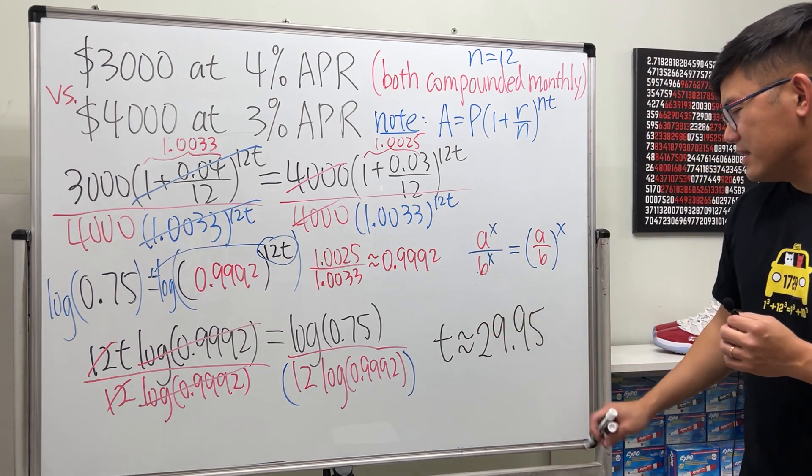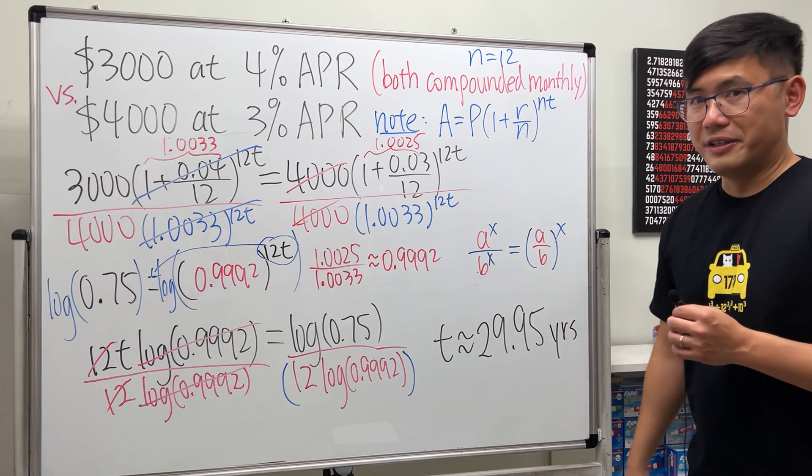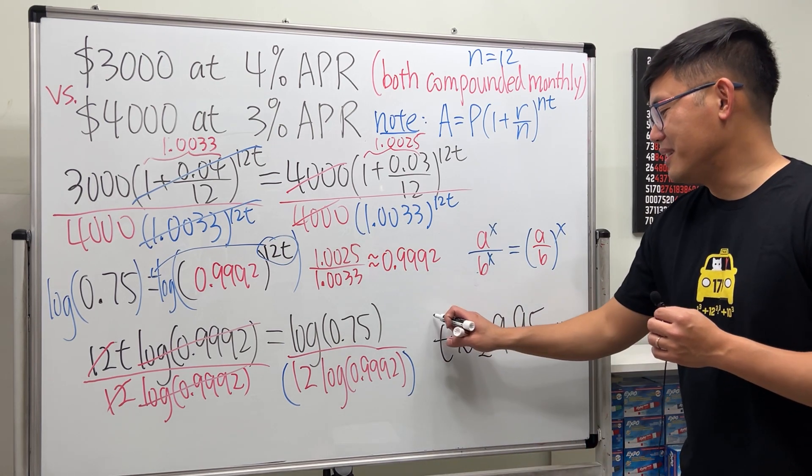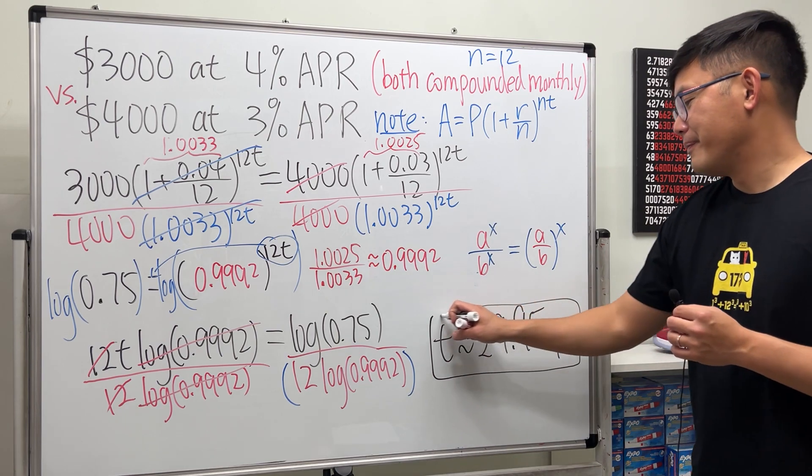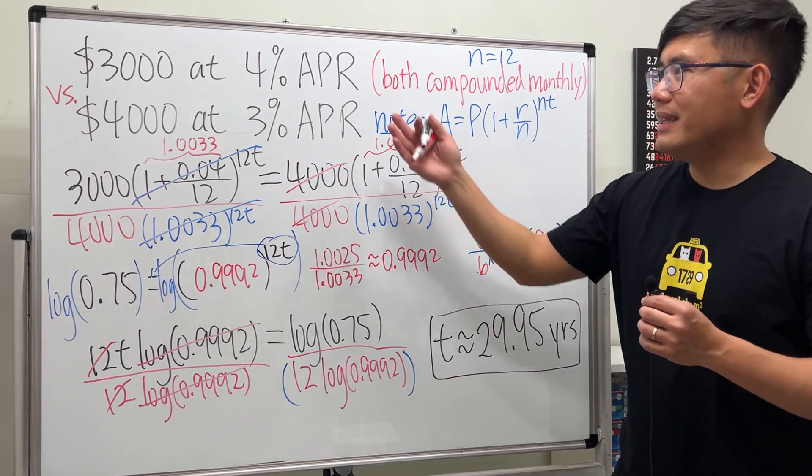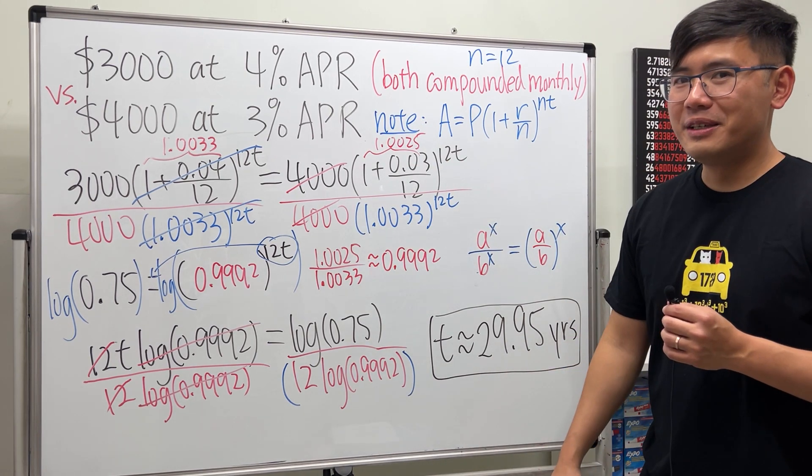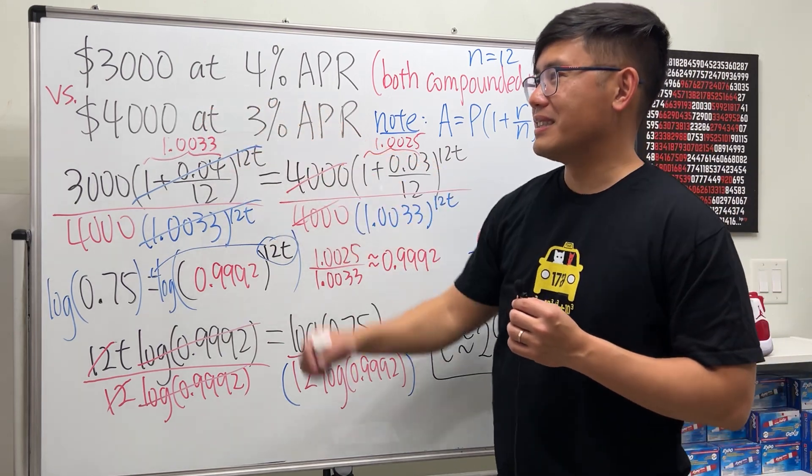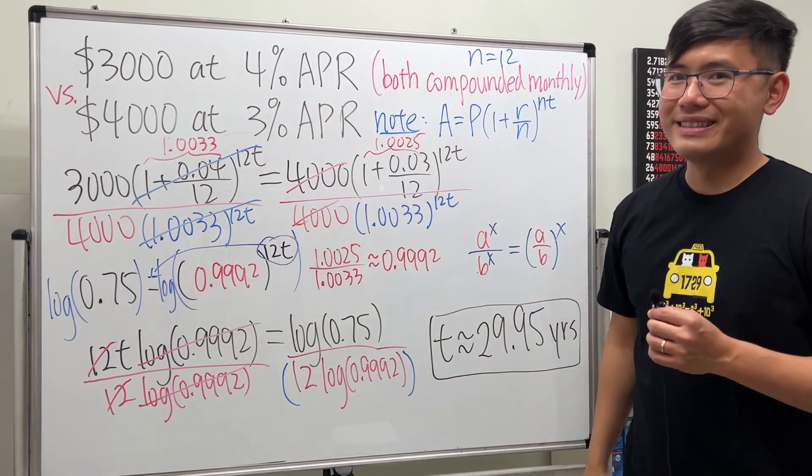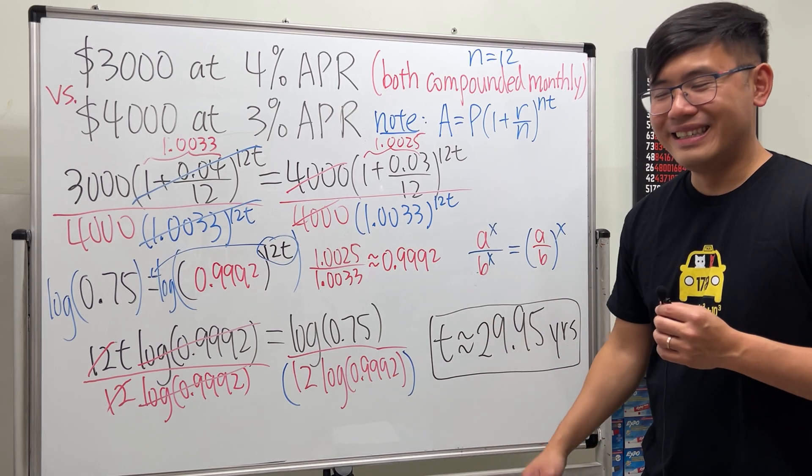The unit for this is years, so about 30 years. For the people who thought that just go for the higher interest rate in this situation, well you have to wait about 30 years in order to catch up with the second account, the second option. So now what would you choose? Let me know.